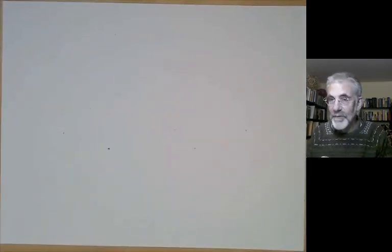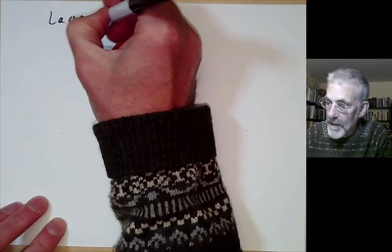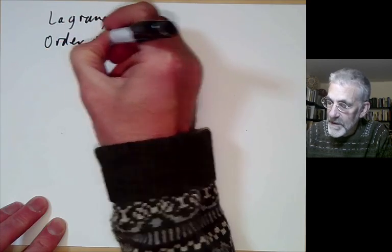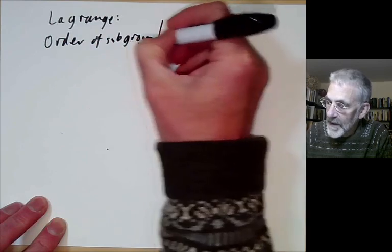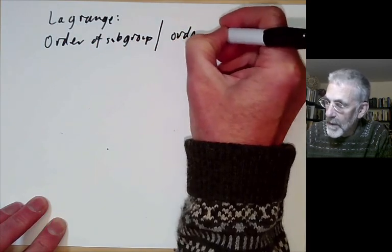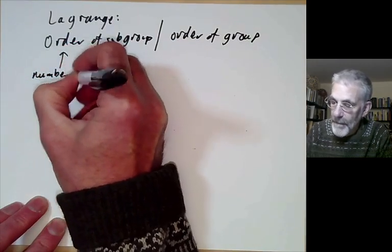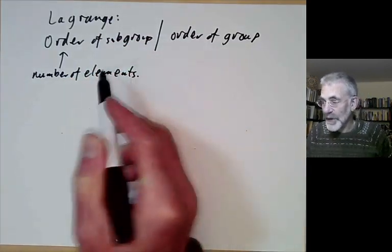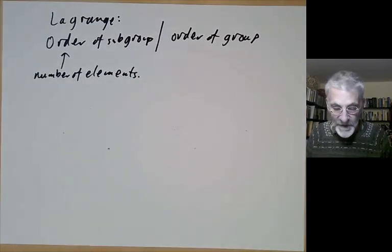Now we come to one of the basic theorems of group theory, which is Lagrange's theorem, which says the order of a subgroup divides the order of a group. The order is just the number of elements. This only applies in an interesting way to finite groups, because if groups are infinite then it doesn't say anything very interesting.